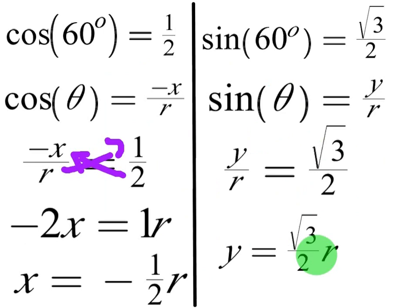I'll show that for those of you who want to see it. Just multiply both sides by r. So there's your y value, square root of 3 over 2r.